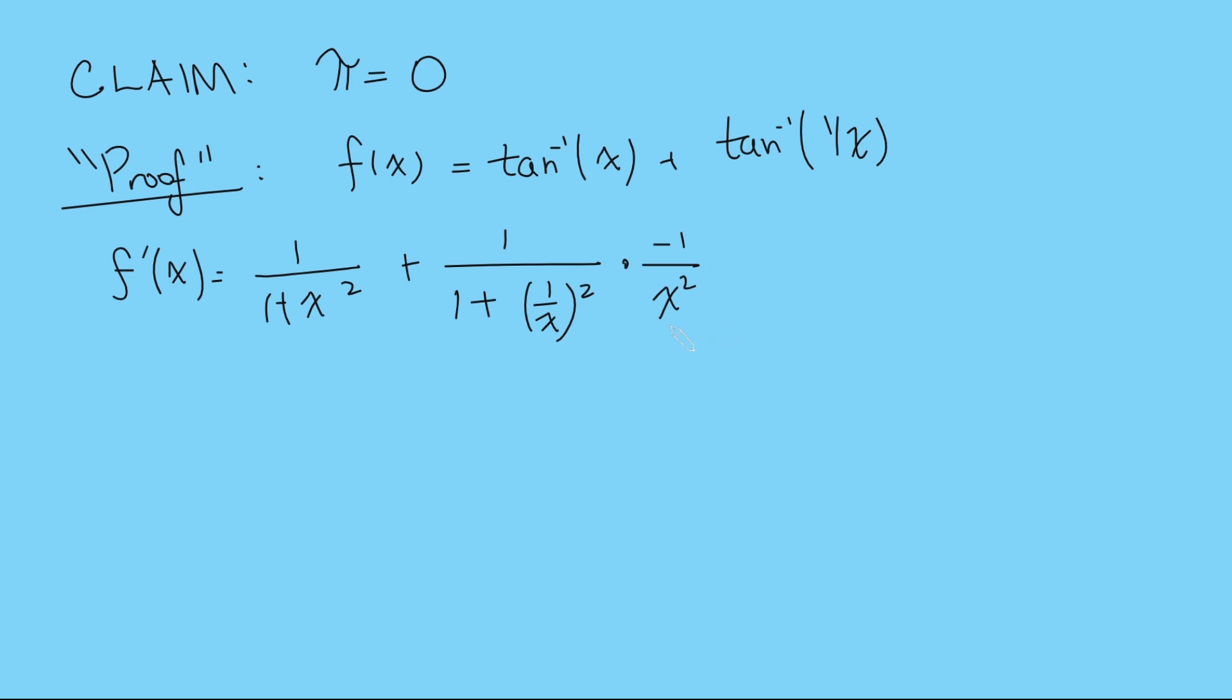And then I need to multiply by the derivative of 1 over x, which is minus 1 over x squared. If I simplify this, the first term stays the same and the second term, I bring the minus to the front and I've got 1 over x squared times x squared plus 1, but these two terms are the same fraction, so that's just going to be 0.